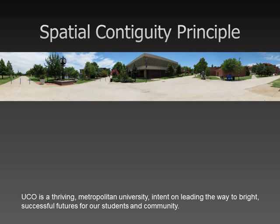The most common example of this is using text to explain an image on a screen. In this situation, the image and the text are separated by a considerable space on the screen, thus violating the spatial contiguity principle. The learner must work much harder to link the two pieces of information together.